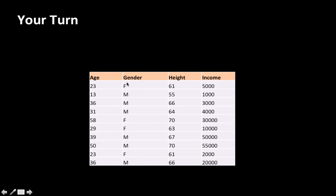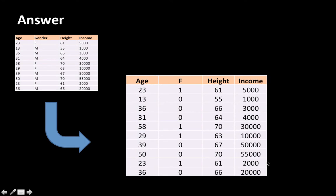So in this example, you have an attribute called gender with values female and male. What would be the dummy attributes for that? We create new dummy attributes: F and M — the two different values. You introduce new attributes called F and M, and leave out one of them. We chose to leave out M and keep F. So for those who are female, this will have a value of 1; for those who are male, it will have a value of 0. So we took a categorical attribute like gender and made it into a numerical attribute with values of 0s and 1s. Once you have 0s and 1s, you can use it in distance computations.